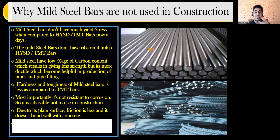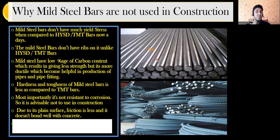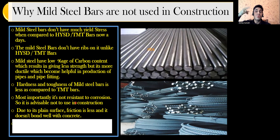To summarize why mild steel is not used: first, it doesn't have much yield stress compared to HYSD and TMT bars; second, it is not resistant to corrosion; third, since it has a plain surface with no ribs, there won't be good friction or good bond between the concrete and the rebar. If you can remember all points, great — but these three are the key ones.